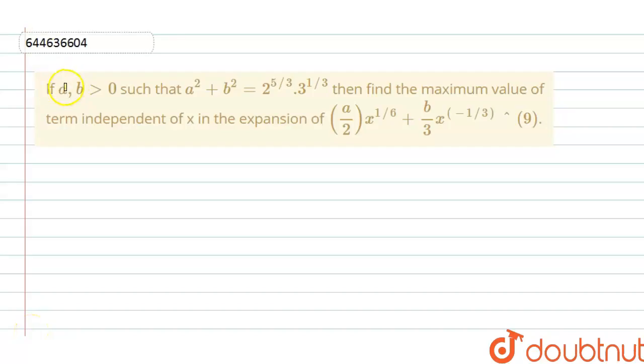Hello everyone, so the question is if a and b is greater than 0 such that a squared plus b squared equals 2 raised to the power 5/3 times 3 raised to the power 1/3, then the maximum value of the term independent of x in the expansion of (a/2) x raised to the power 1/6 plus (b/3) x raised to the power minus 1/3 whole raised to the power 9.